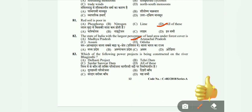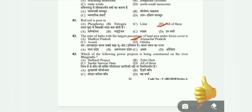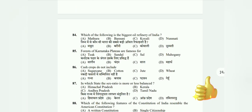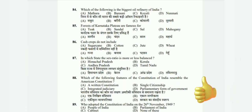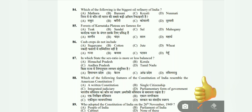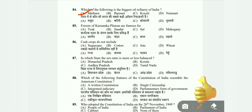Question 83: Which power project is being constructed on the river Bhagirathi? Options: Dhulhasti Project, Tehri Dam, Sardar Sarovar Dam, or all of these. The correct answer is B, Tehri Dam. Question 84: The biggest oil refinery of India is in Mathura, Barauni, Koyali, or Nunmati? The correct answer is Mathura. Question 85: Forests of Karnataka Plateau are famous for Teak, Sandal, Sal, or Mahogany? The correct answer is B, Sandal.